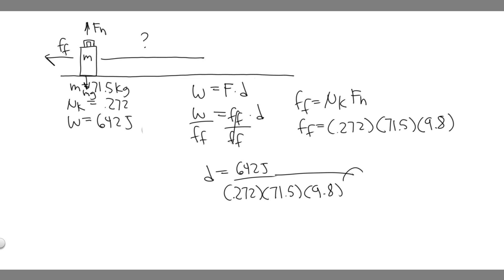And so what we want to do now is just plug this in your calculator. So 642, and then divide by 0.272 times 71.5 times 9.8. And so when you go ahead and do this, you're going to get that the distance is equal to 3.3684 and so on.